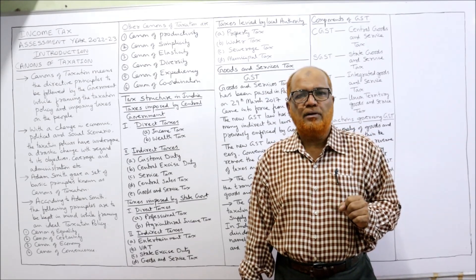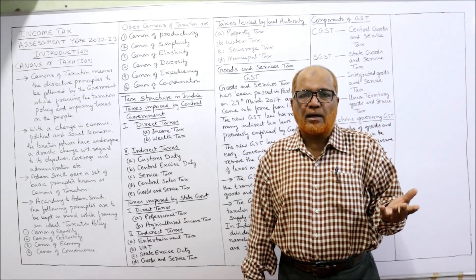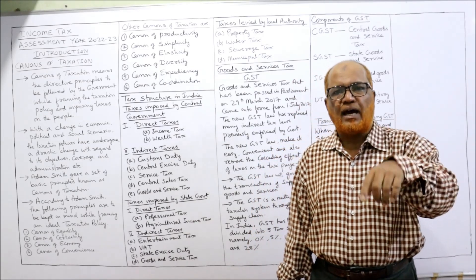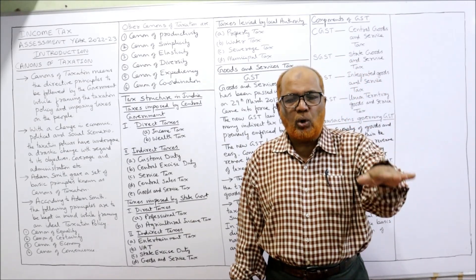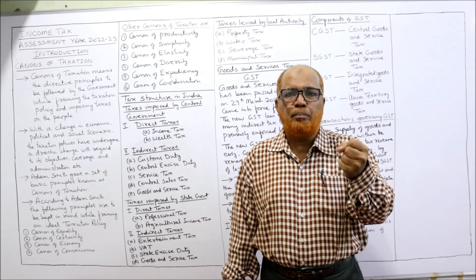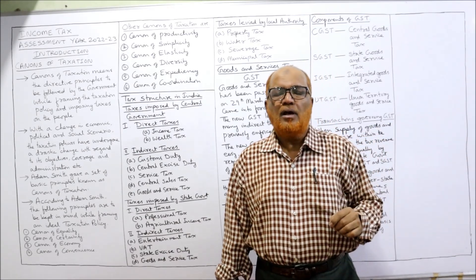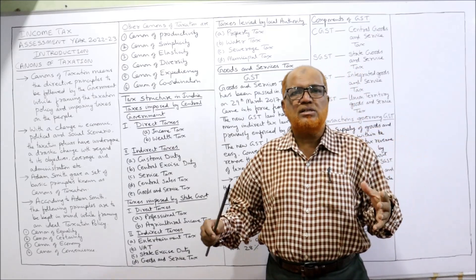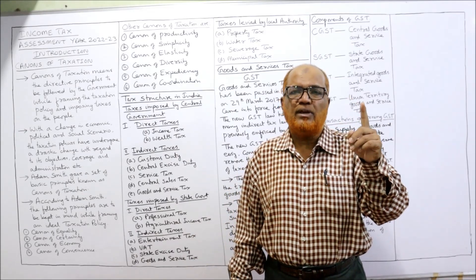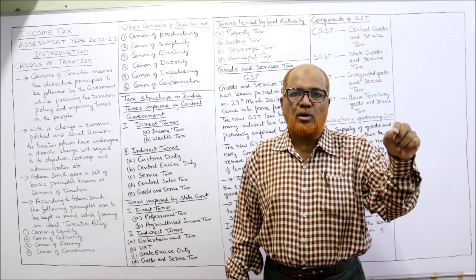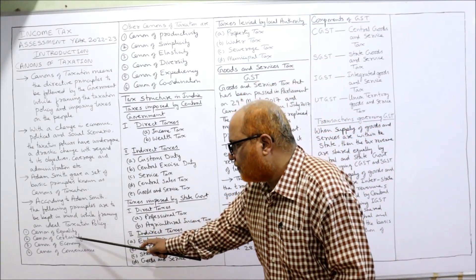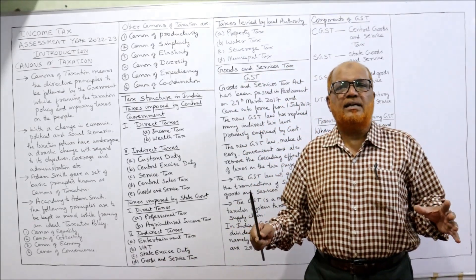The first canon is the Canon of Equality. This means taxes should be based on the income and wealth of the people. If a person has more income, they pay more tax; less income, less tax. There should be a direct relationship between income, wealth, and tax — higher income, higher tax; lower income, lower tax. According to the ability to pay, that much tax should be implemented. Otherwise there will be injustice and resistance from the people.